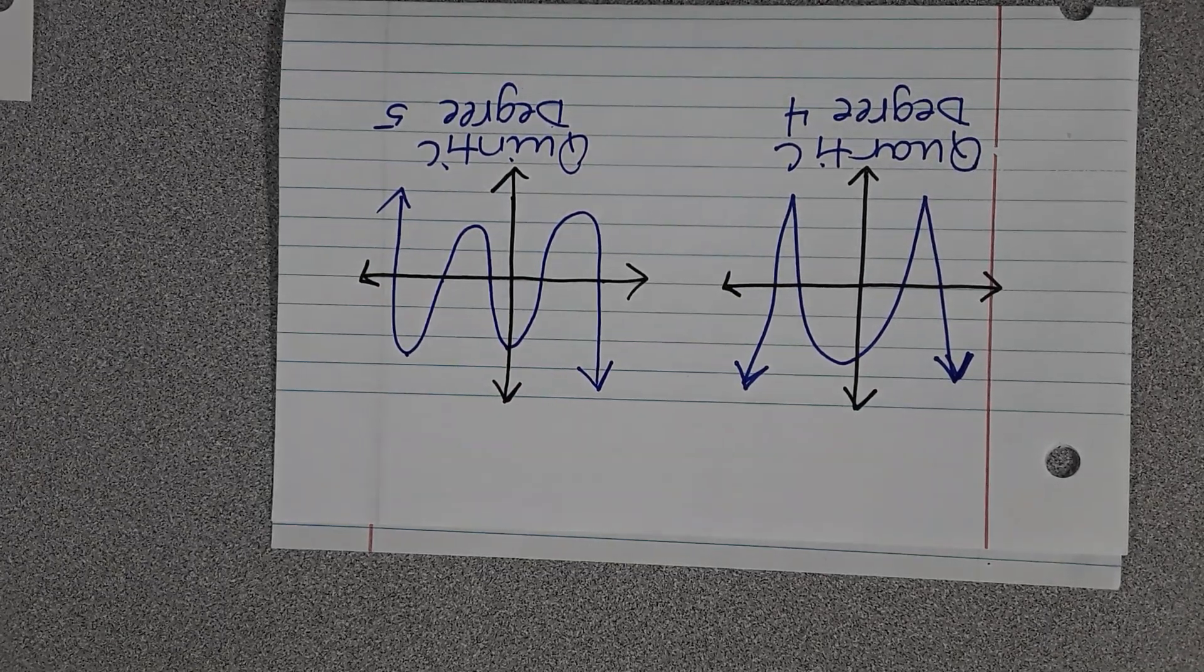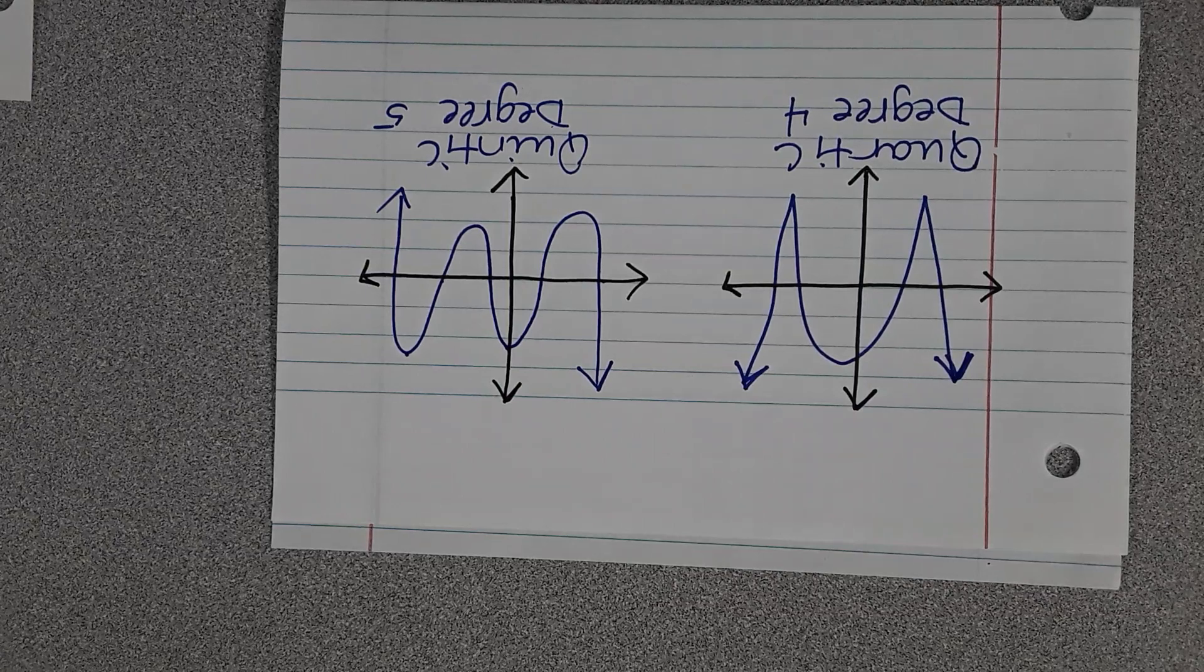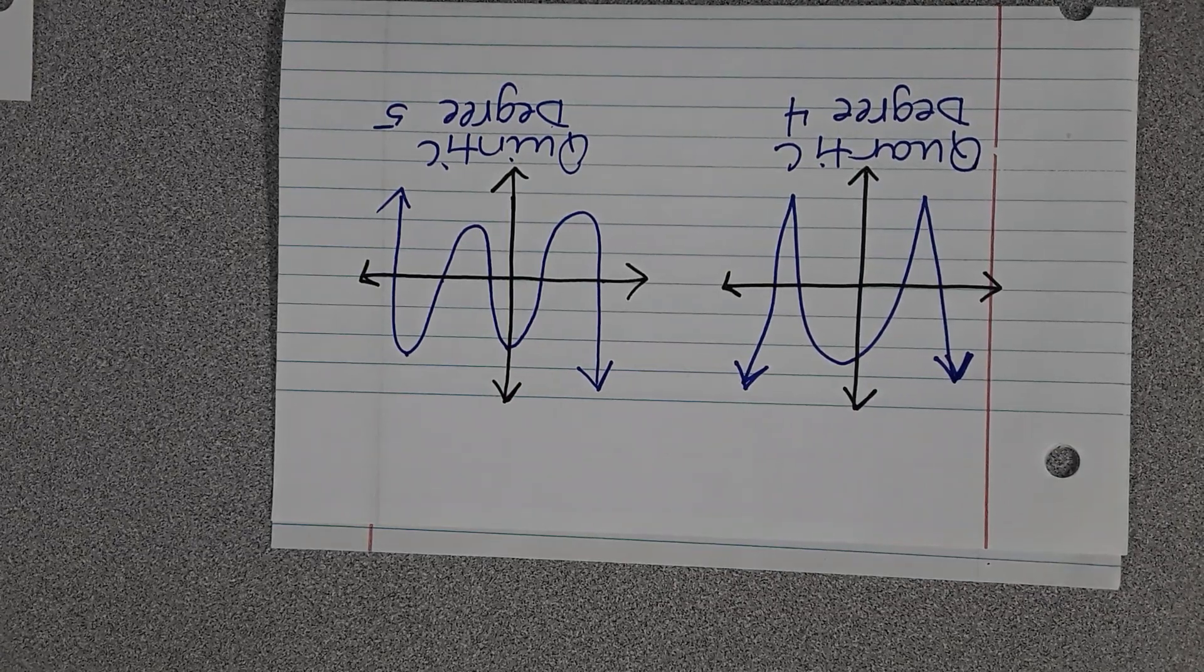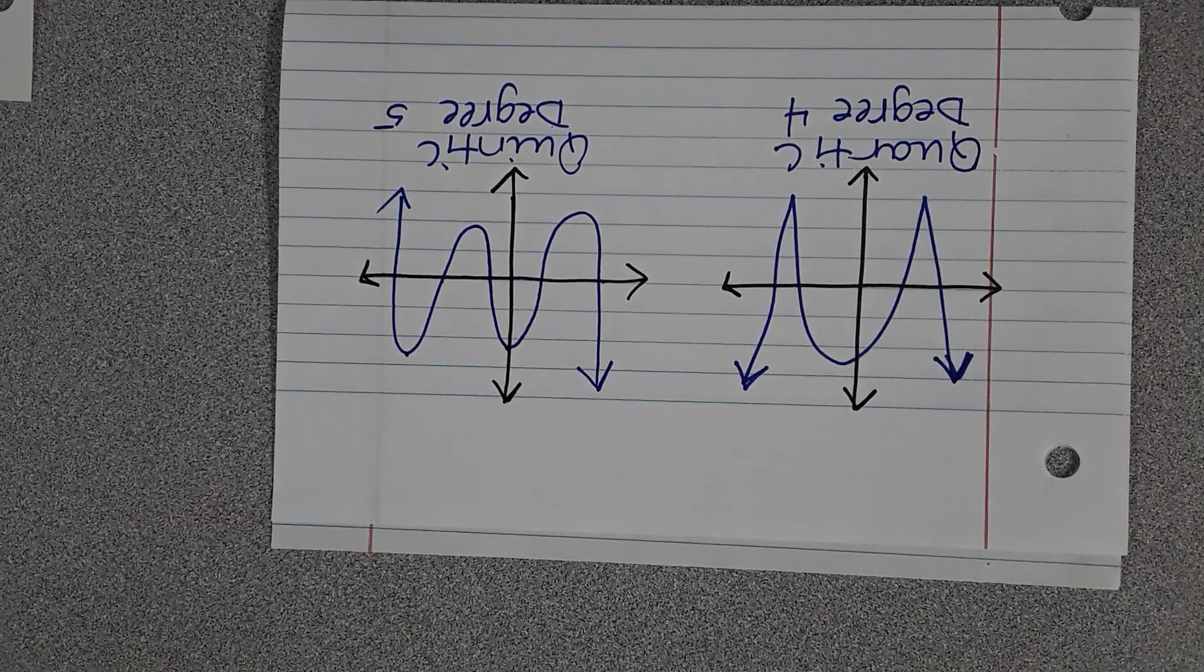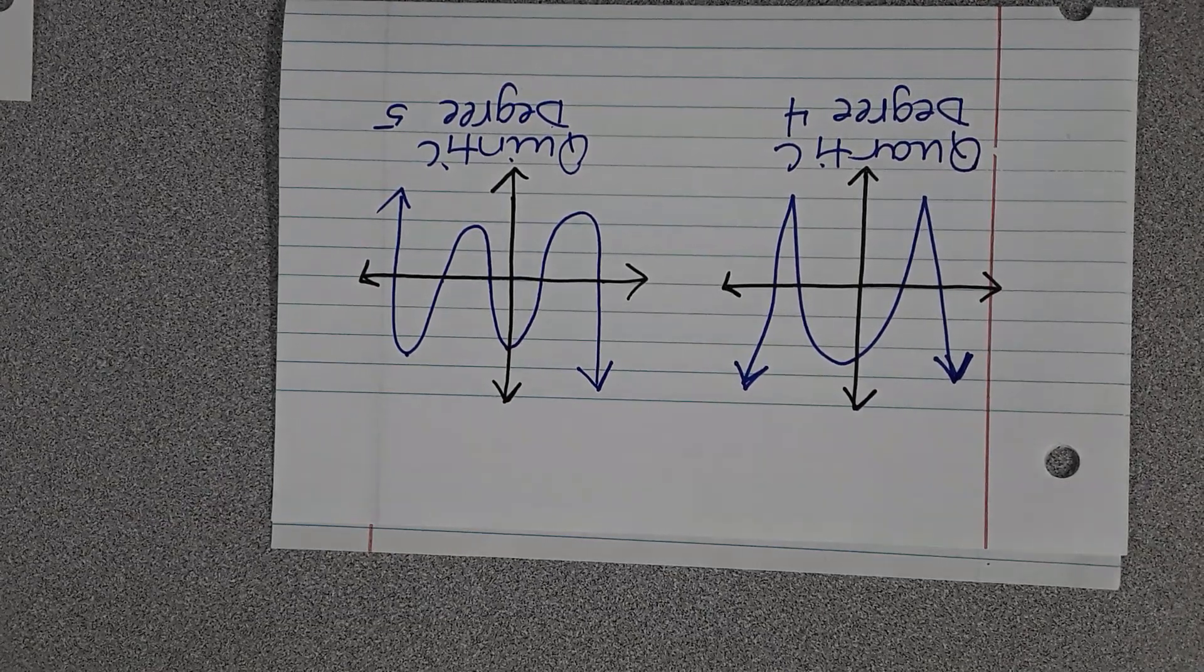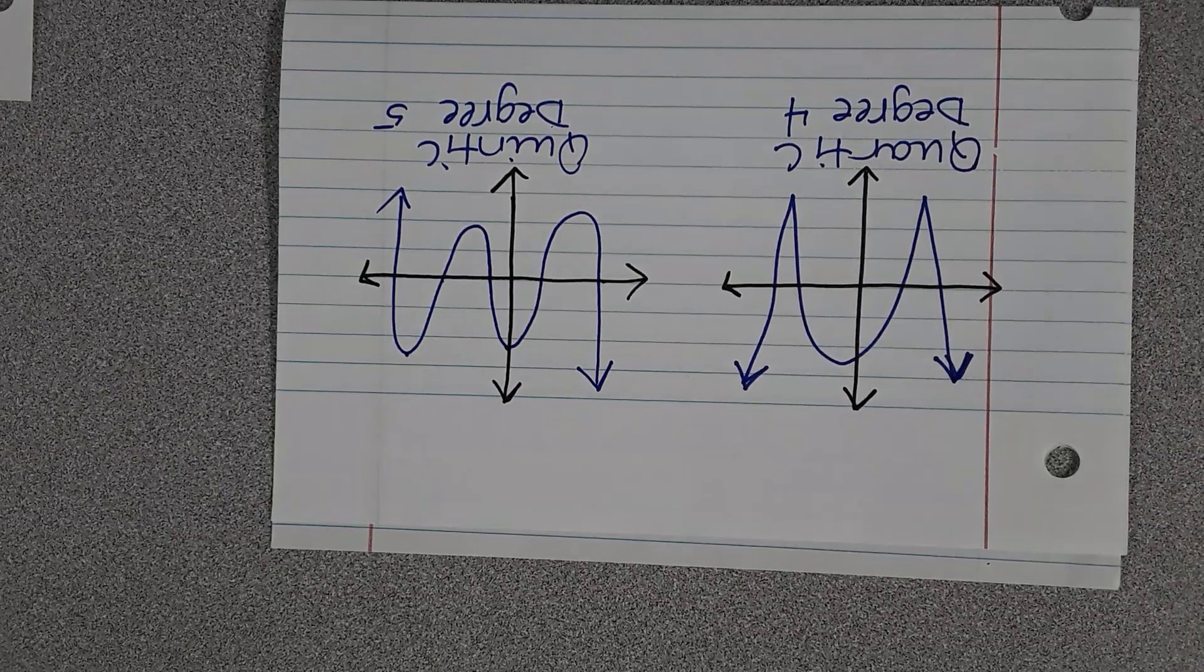So if it's even, it ends up both the same ways. If it's odd, it ends in different directions. And then on Tuesday, we'll talk about how you know if A is positive or A is negative.